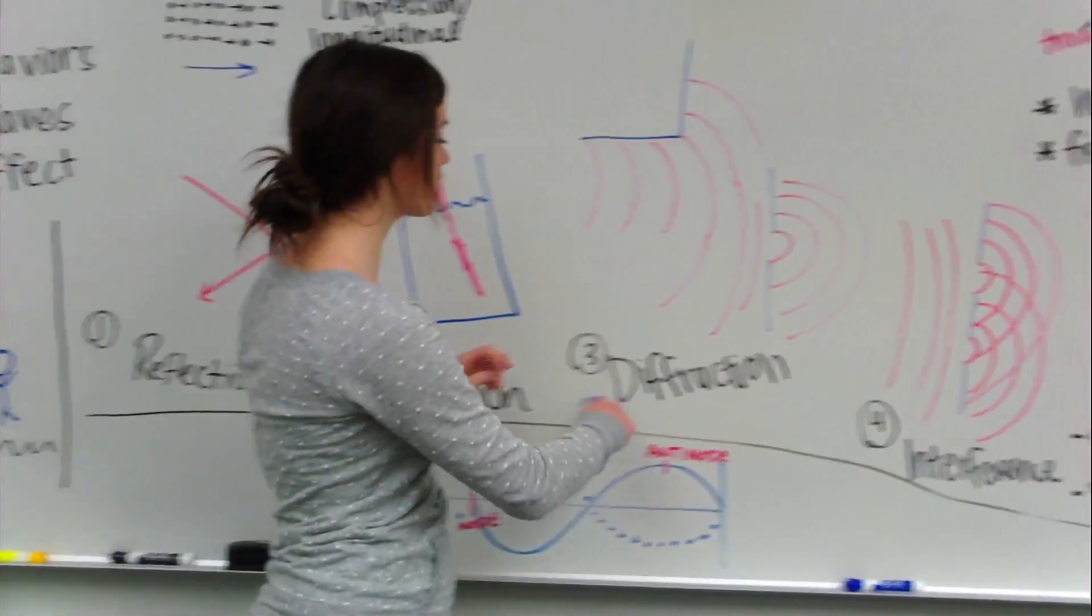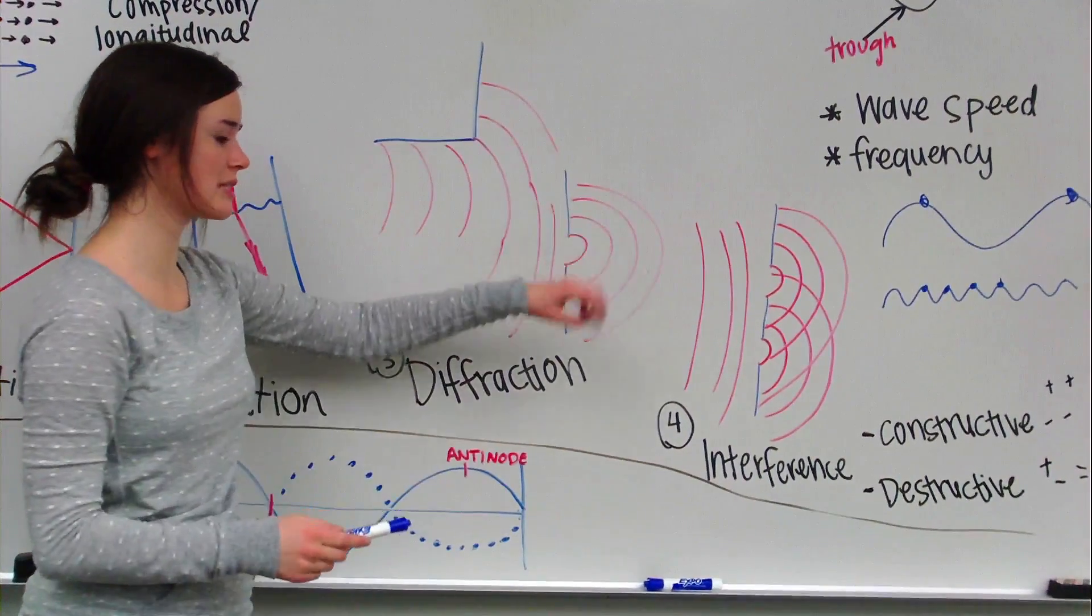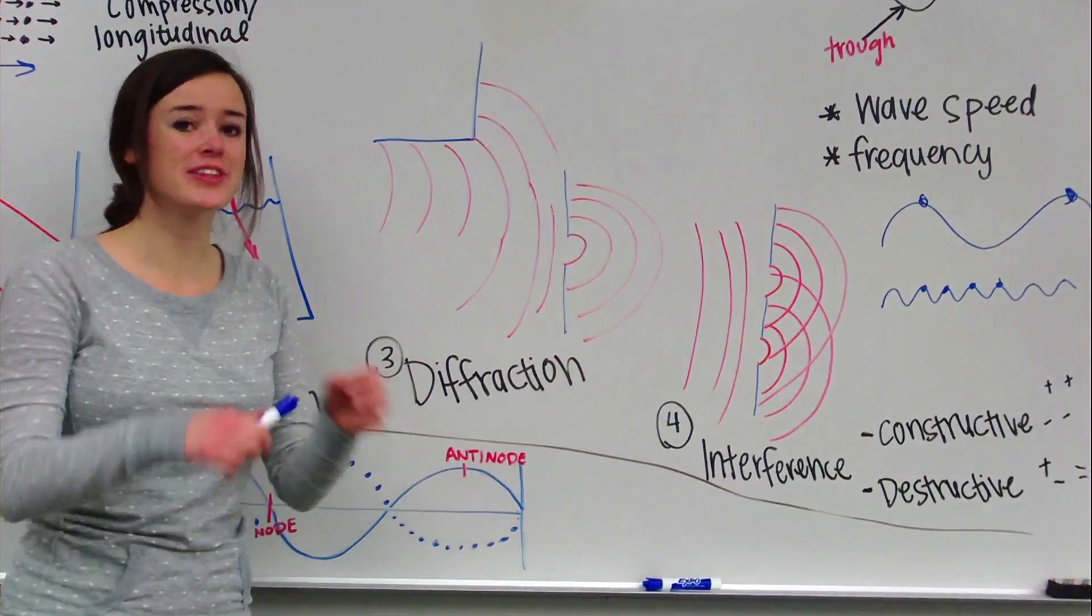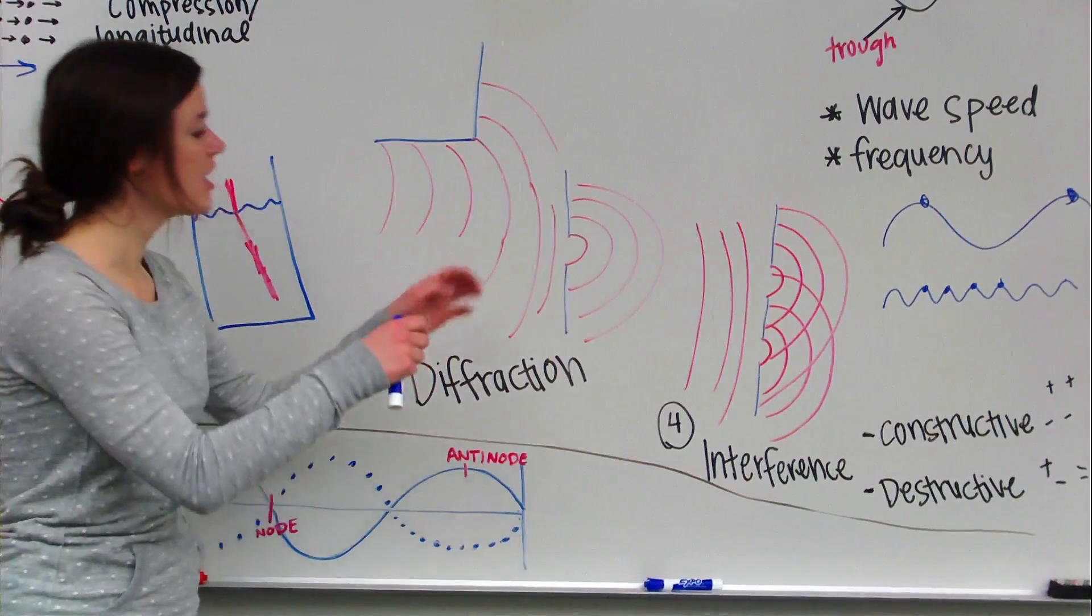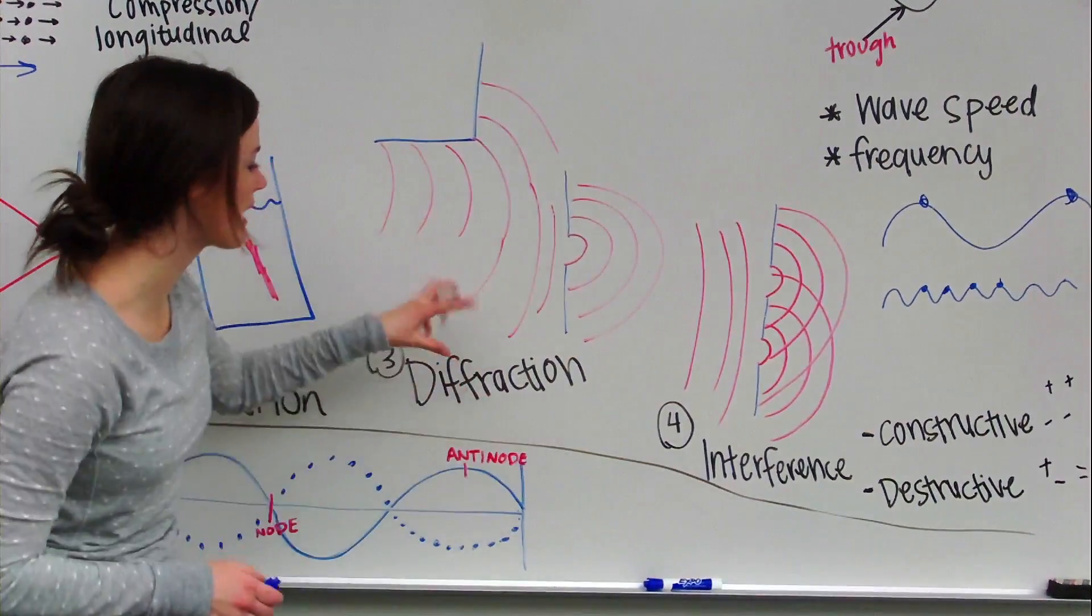So next we have diffraction. So, as a wave either turns a corner or goes through a slit, it's going to spread out. You can think of people trying to get into a concert, the doors finally open, and they finally get to spread out.